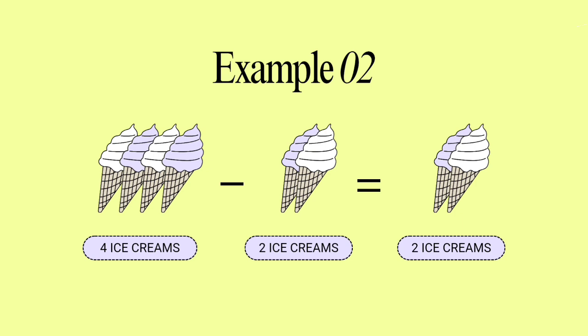If you have four ice creams and you ate two ice creams, how many ice creams do you have left? Two ice creams.